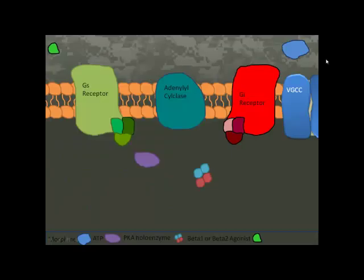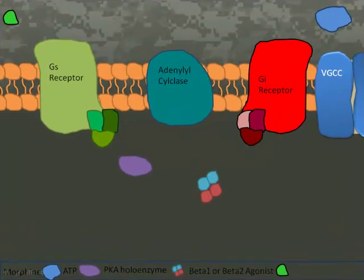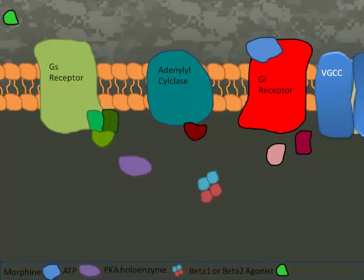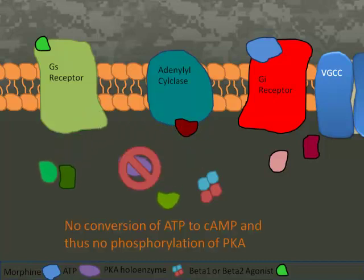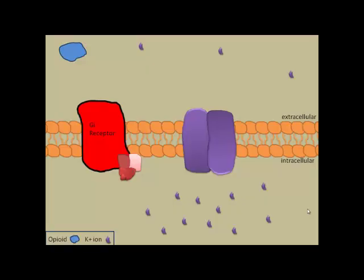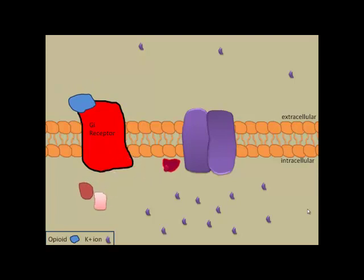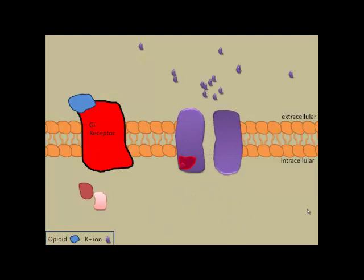Here we see the effects of morphine binding and activating the Gi protein coupled receptor, resulting in inhibition of adenylyl cyclase, which results in reduced activation of cAMP, preventing cAMP-mediated cellular processes. Another effect of morphine binding and activating the Gi protein coupled receptor is hyperpolarization of the cell with increased potassium conductance and decreased neurotransmitter release.